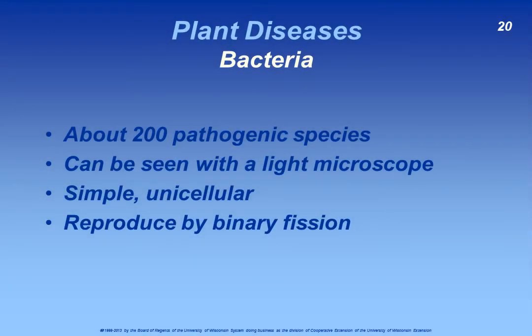The second major group of plant pathogens is the group that contains the bacteria. You're probably familiar with these because certainly there are human diseases that are caused by bacteria. Amongst the plant pathogens there are about 200 species of bacteria that can potentially cause diseases. These are relatively small organisms, certainly compared to the fungi that we just discussed.